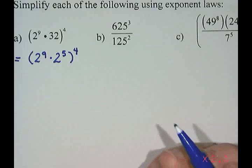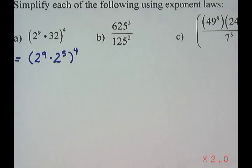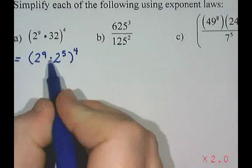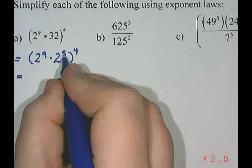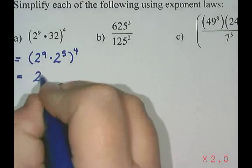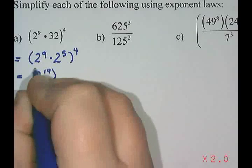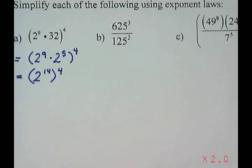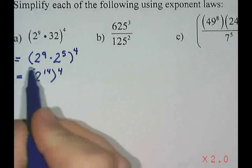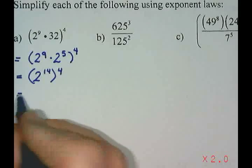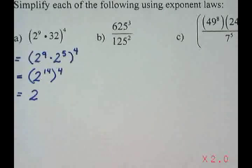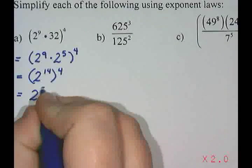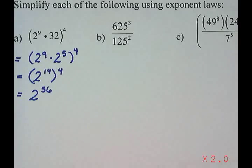I replace 32 with two to the power of five, and that's all to the power of four. Now I use exponent laws: this is multiplication, so I add exponents — nine plus five is 14, giving two to the power of 14, all to the power of four. With brackets and an outside exponent, I multiply: 14 times four is 56. The answer is two to the power of 56.